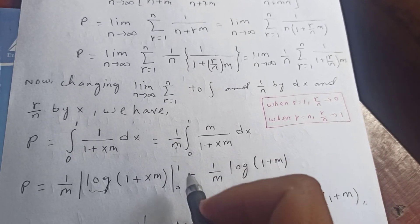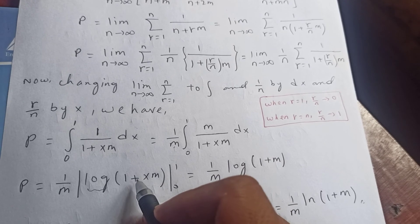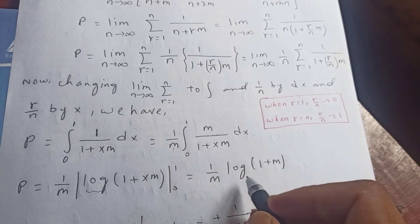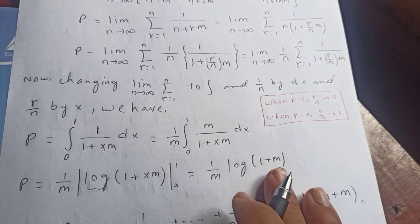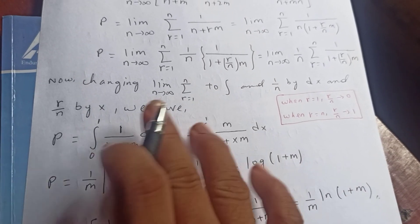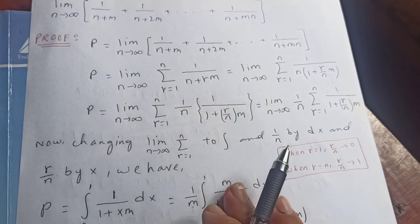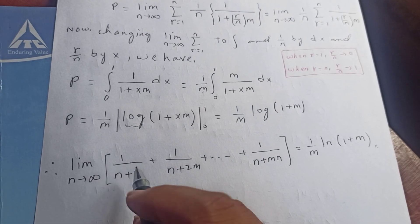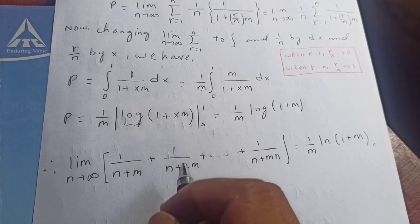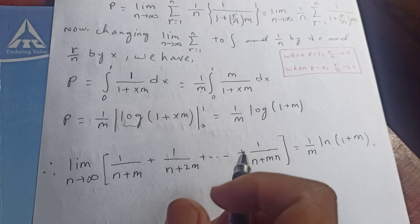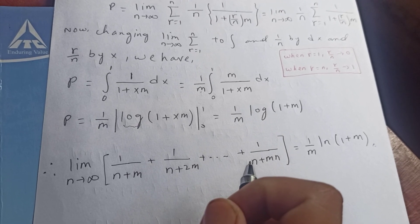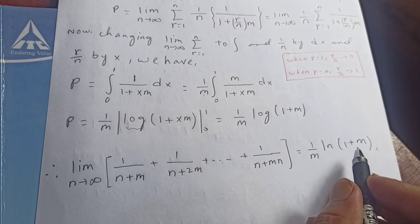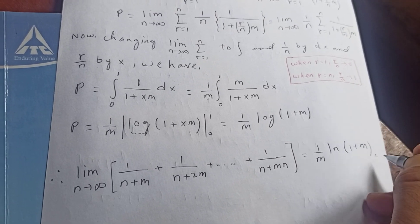So the result is: P = (1/m) · ln(1 + m). That is, the limit as n tends to infinity of 1 over (n + m) + 1 over (n + 2m) + ... + 1 over (n + mn) equals (1/m) · ln(1 + m). That's it!